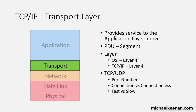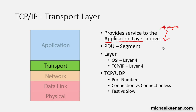Hey guys, this is Mike Keenan here. Today I'm going to go over the TCP/IP transport layer. This is also the OSI transport layer. The transport layer provides a service for the application layer which is above it. The application layer is the one that creates the data and then, using HTTP or HTTPS, it sends that data down to the transport layer. Once it gets down to the transport layer, it turns it into what's called a segment. The protocol data unit for the transport layer is a segment, and it is layer four for both the OSI model and the TCP/IP model.